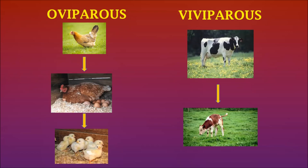Viviparous organisms are those which directly give birth to young ones. The best example for viviparous organisms are mammals. Mammals directly give birth to young ones and feed them with their milk, so they are known as mammals. The best example for viviparous is mammals.